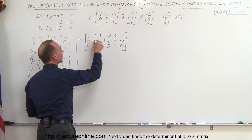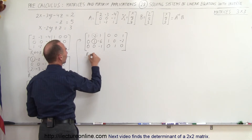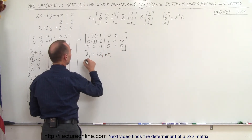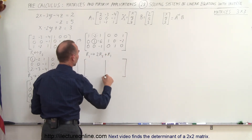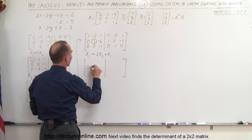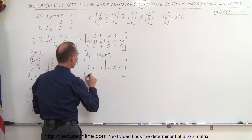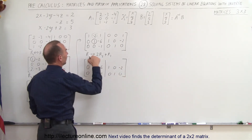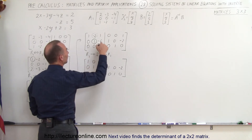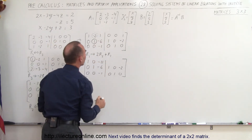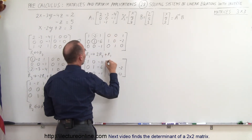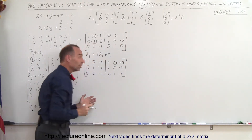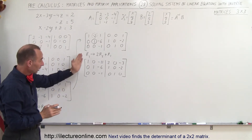Now I use this 1 in row 2 to turn the -2 in row 1 into a 0 by replacing row 1 with positive 2 times row 2 added to row 1. Row 2 stays: 0, 1, -6, 1, 0, -2. Row 3 stays: 0, 0, -1, 0, 1, 0. For row 1: 1 stays; 2 times 1 plus -2 is 0; 2 times -6 plus 1 is -11; 2 times 1 plus 0 is 2; 2 times -2 plus 1 is -3.